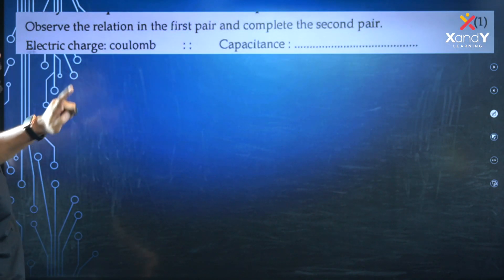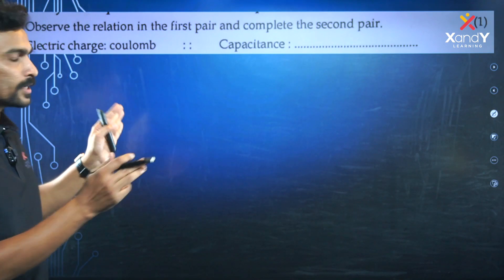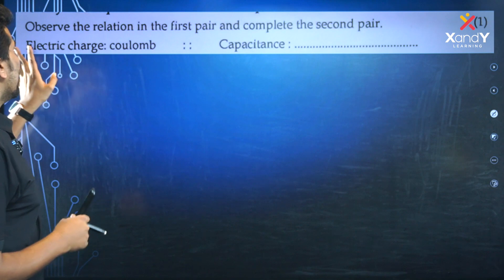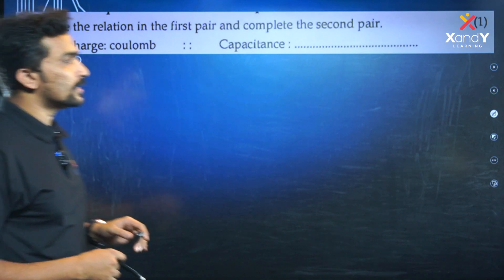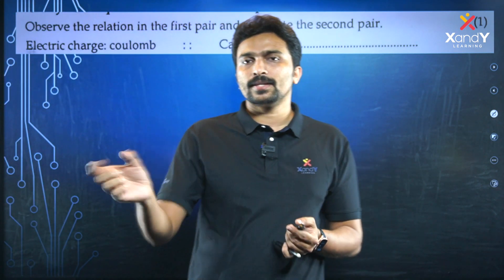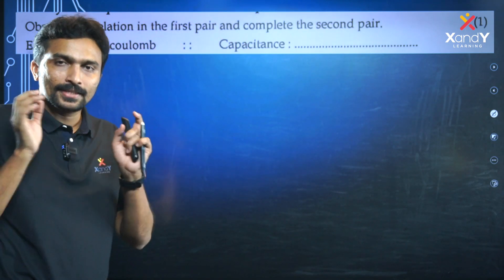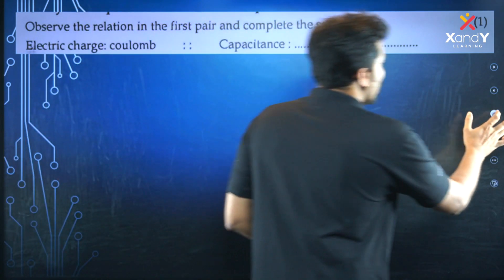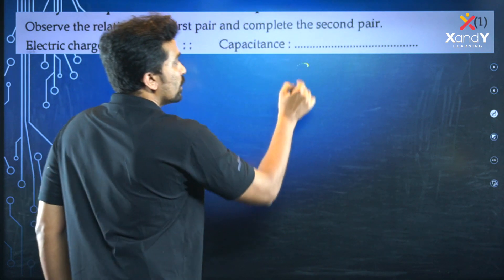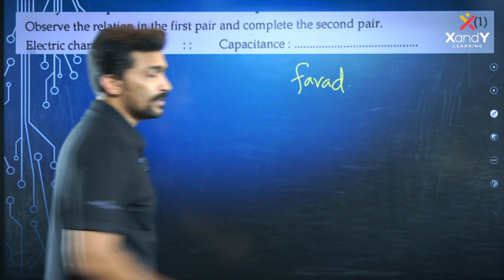Next: Observe the relation in the first pair and complete the second pair. This third question about units is from the electricity chapter. Electric charge has SI unit Coulomb, which we study in static electricity. Similarly, capacitance has SI unit Farad.